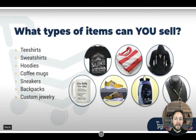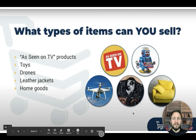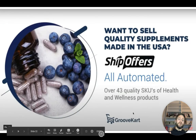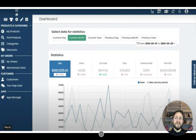LayerApp lets you make great custom designs. You can also sell as-seen-on-TV products, toys, drones, leather jackets, and home goods — drones are a huge one right now. You can easily pick up products, get them in your cart, and send people direct to these offers. Even quality supplements made in the USA can be fully automated, shipping products straight to the consumer through your GrooveKart store without you ever seeing the product.